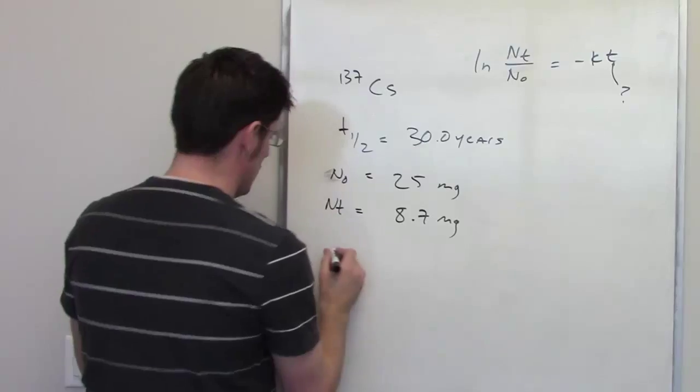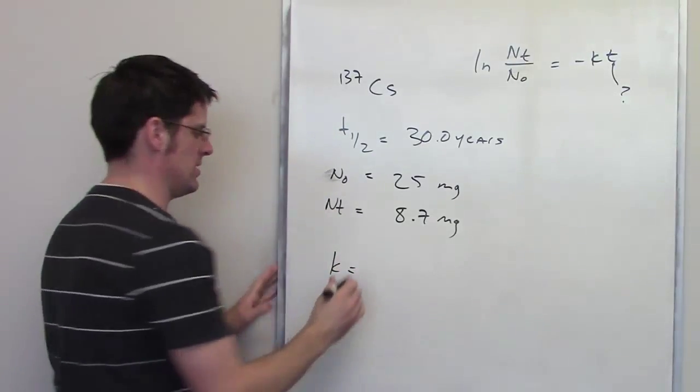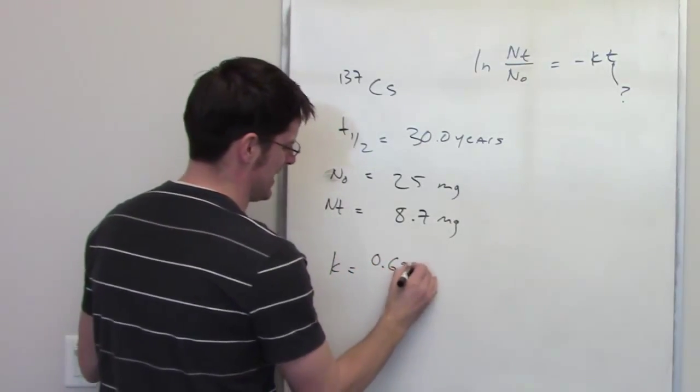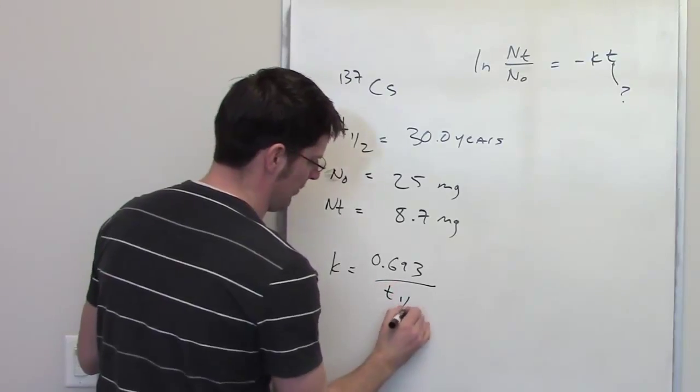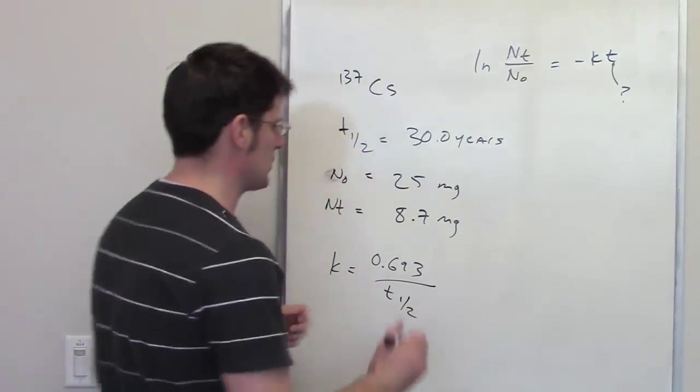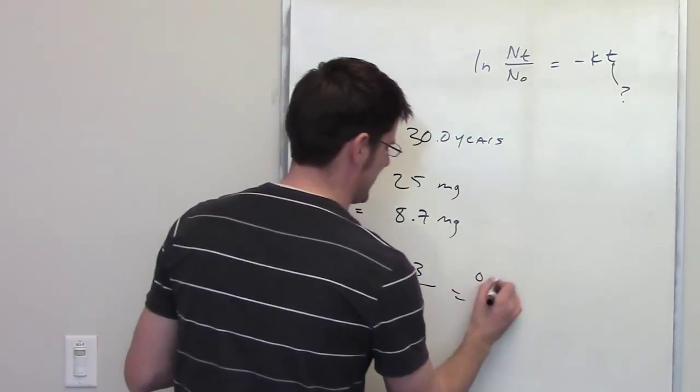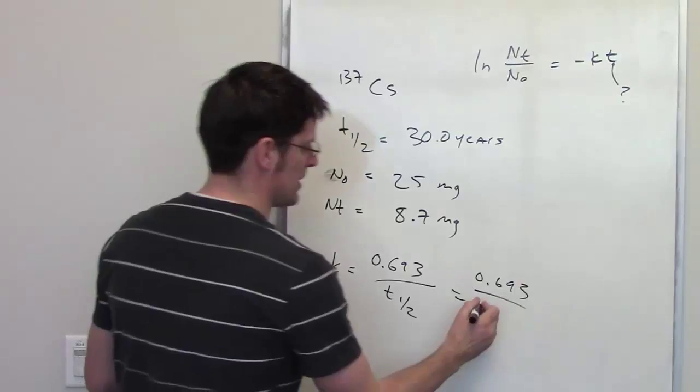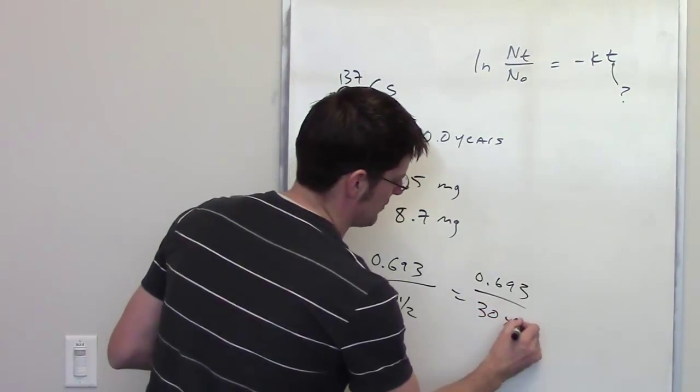Well, there's a separate equation that I also gave you in the lecture video that says that k is equal to 0.693 divided by the half-life of the substance in question, or t sub 1 half. So I can go ahead and put 0.693 divided by 30 years, because it gives me that as the half-life.